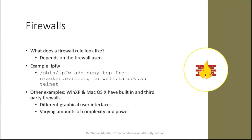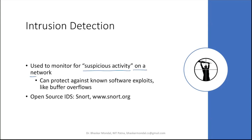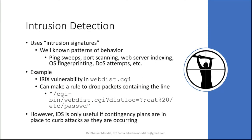Intrusion detection systems are used to monitor for suspicious activity on a network and can protect against known software exploits like buffer overflows. Open-source IDS systems are available, such as Snort. Intrusion detection uses intrusion signatures — well-known patterns of behavior — as one method of identifying attacks.